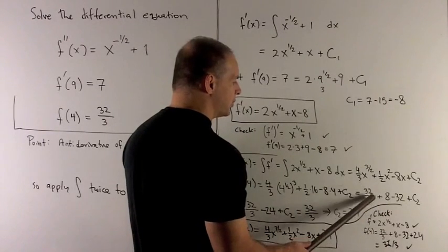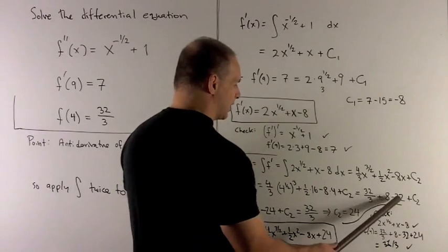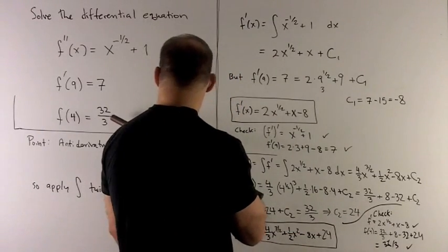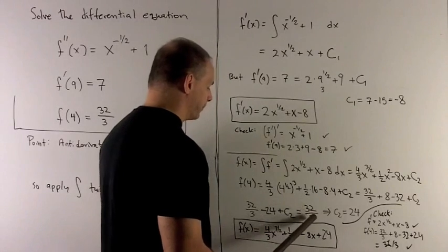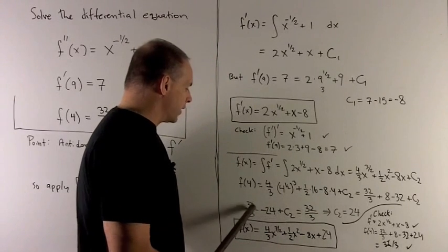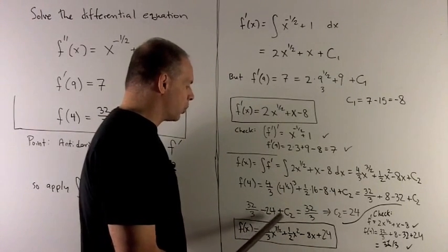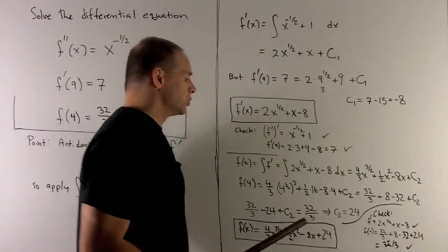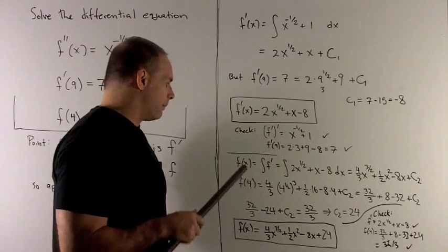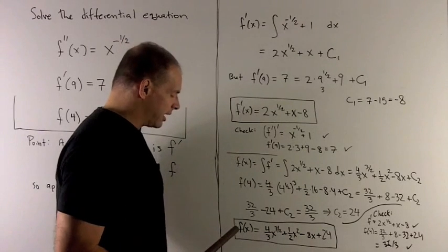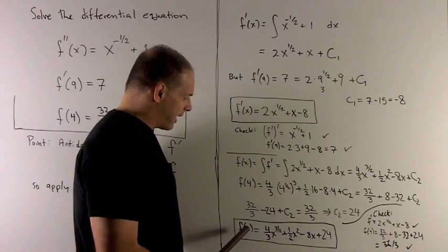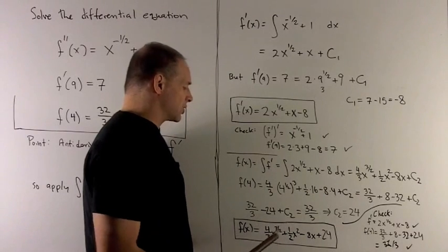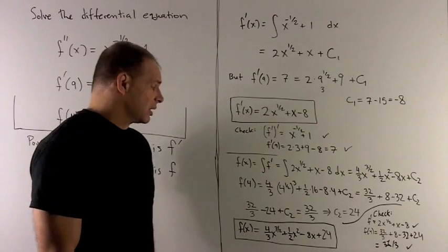So what do we have? We have 32 thirds minus 24 plus c2. But we knew that was originally by assumption 32 over 3. So the 32 over 3's cancel out, and then I can push the 24 to the other side, giving me c2 equals 24. I put that in for my equation here, and we get, as a final answer, f of x equals 4 thirds x to the 3 halves plus 1 half x squared minus 8x plus 24.